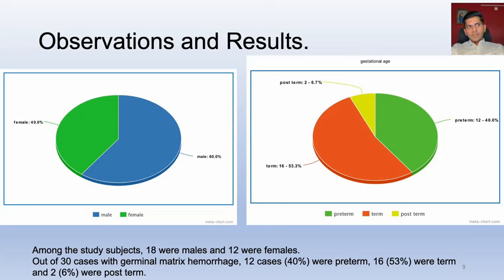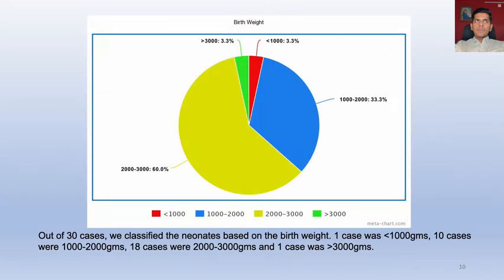Observations and results: Among the 30 cases, 18 were males and 12 were females. 12 cases were preterm, 16 cases were term, and 2 were post-term. Classifying neonates based on birth weight: 1 case was less than 1000 grams, 10 cases between 1000 and 2000 grams, 18 cases between 2000 and 3000 grams, and 1 case was more than 3000 grams.